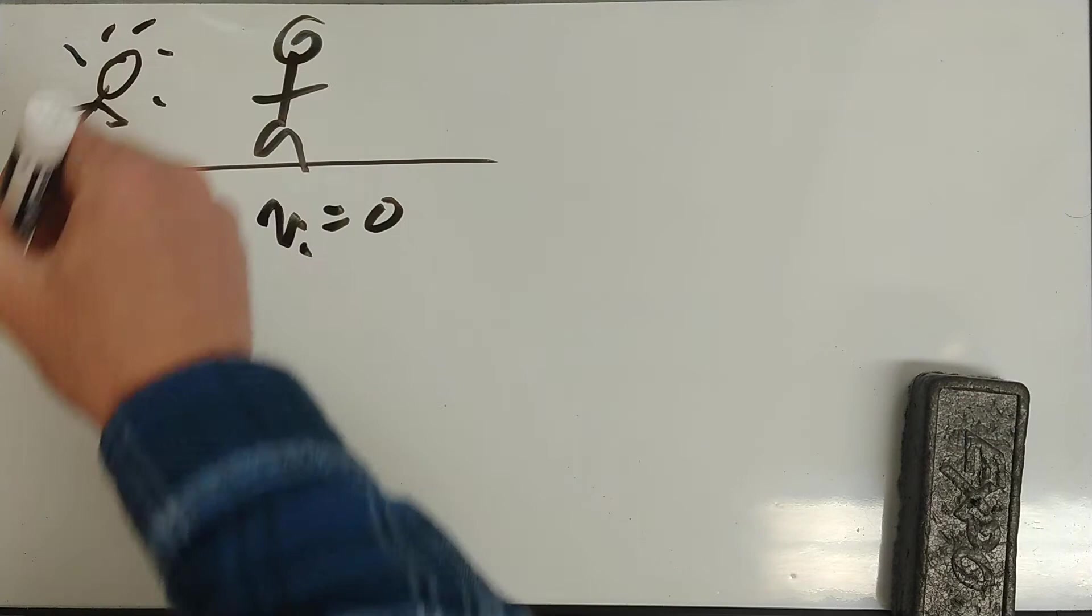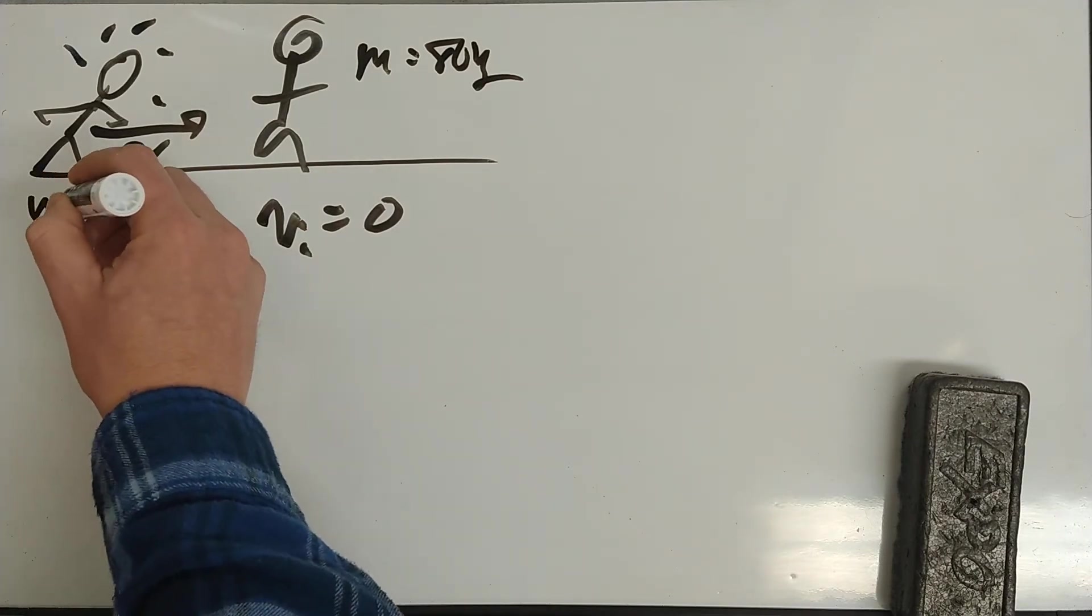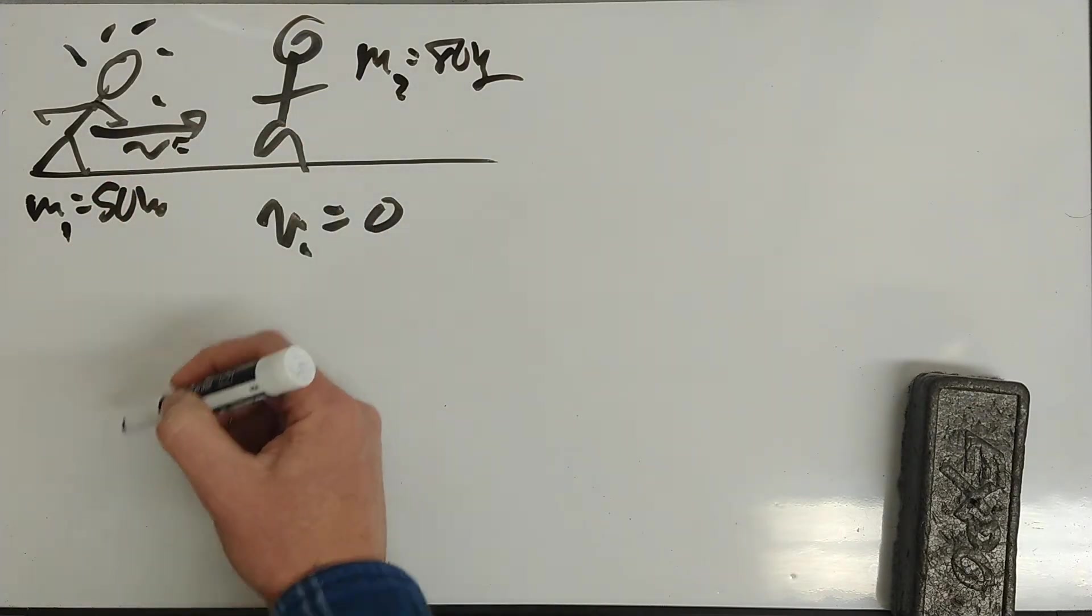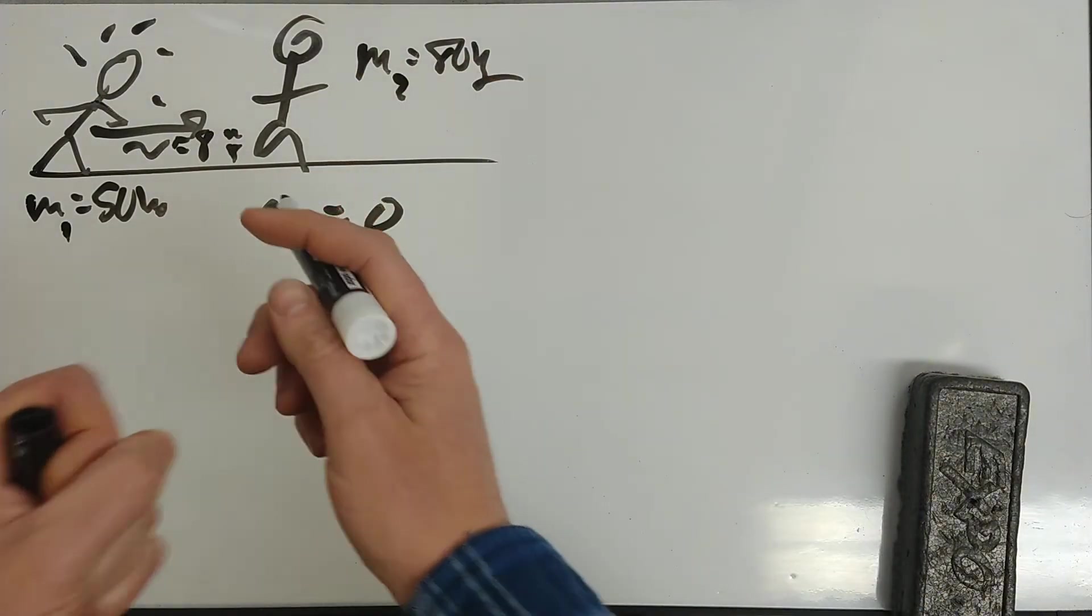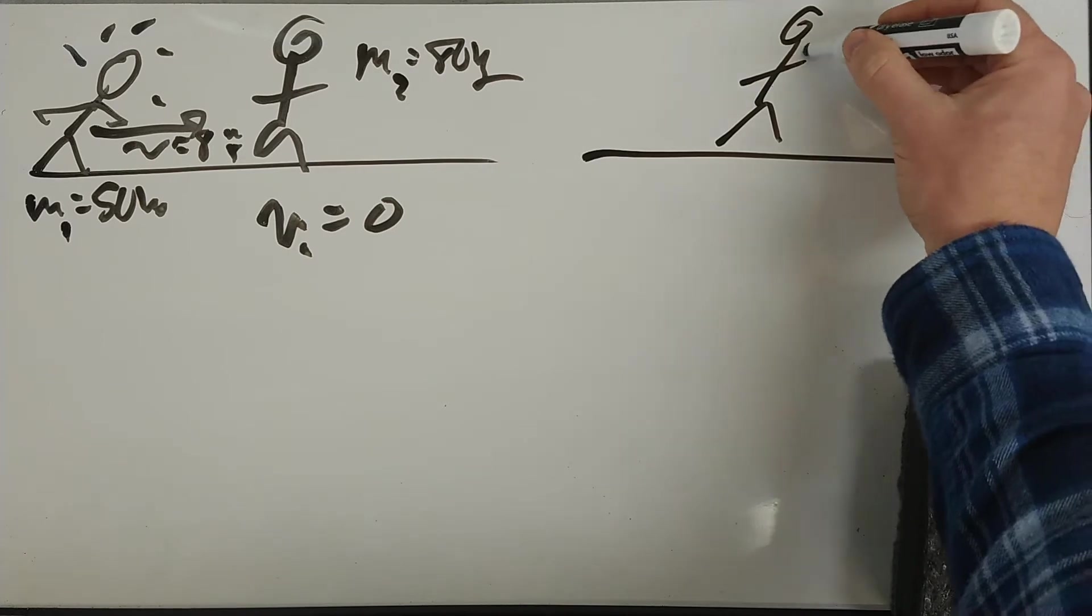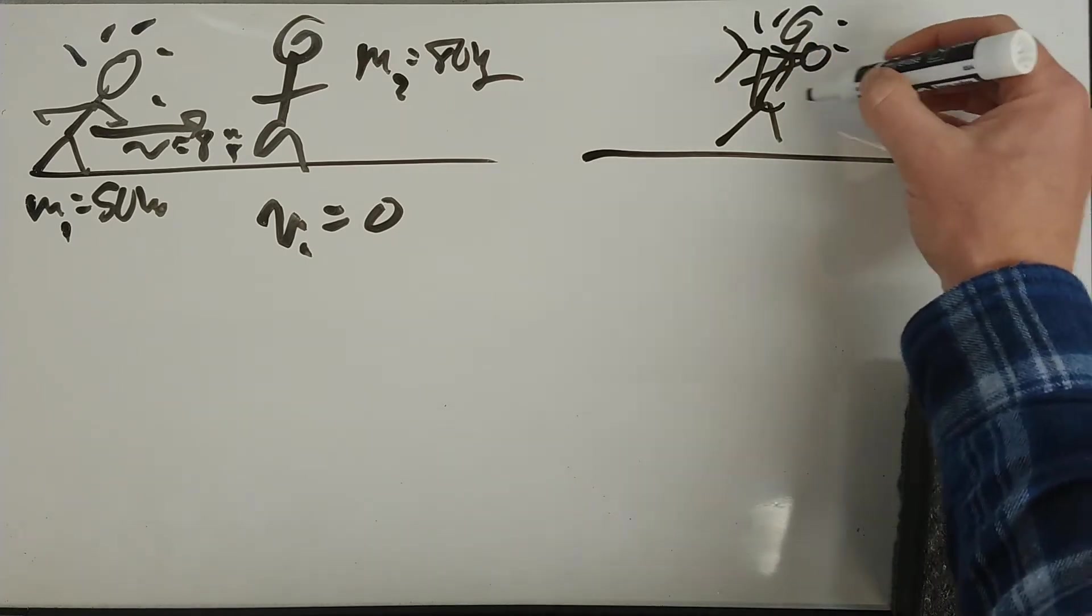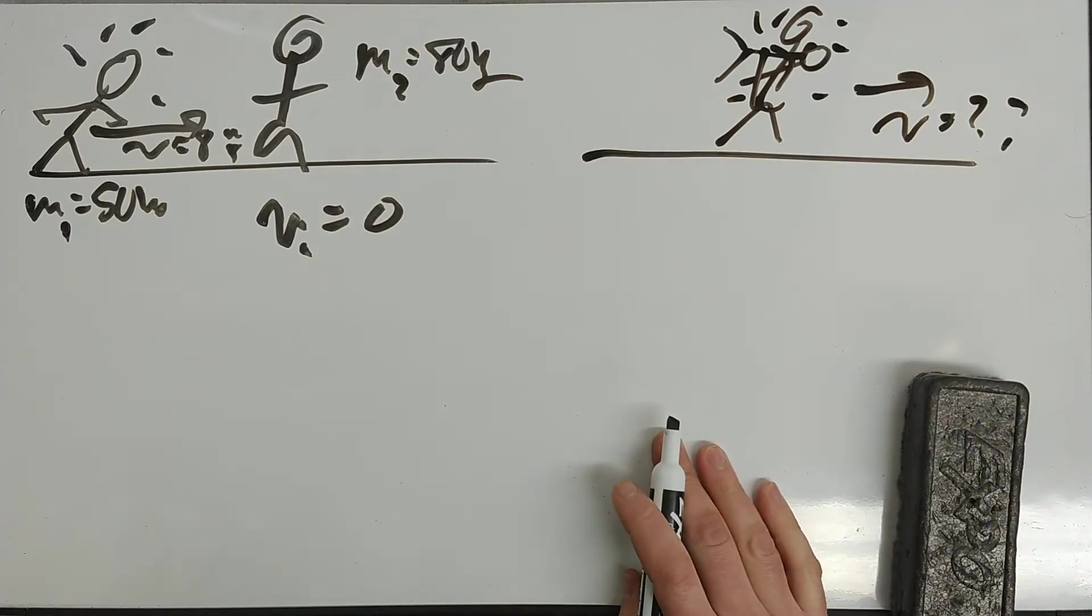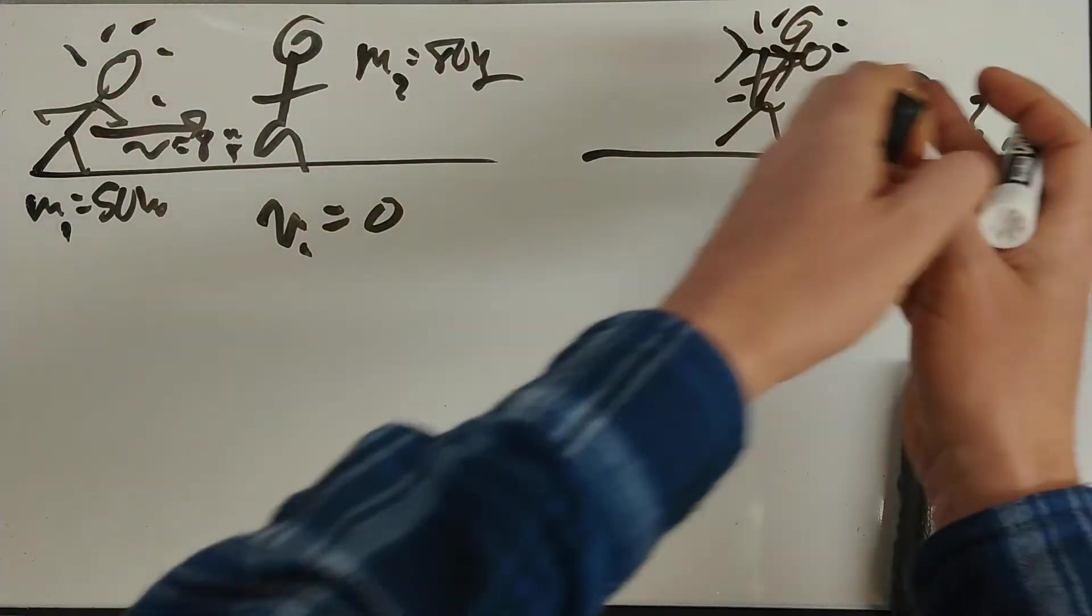For example, let's say we have somebody with v initial zero, and someone smaller decides to be a little aggressive guy and run at them. Let's make this guy's mass 80 kilograms, this guy's mass 50 kilograms. This person's aggressive—let's say they can get up to eight meters per second. They run, grab on to this person, jump on them, and they move together.